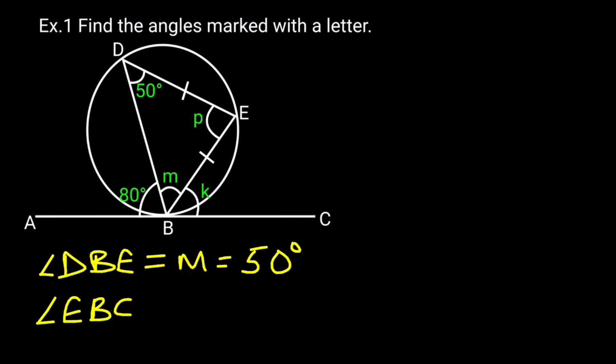Angle EBC, which is K, equals 50 degrees. Reason: angle in alternate segment. Angle DEB, which is P, equals 80 degrees. Reason: also angle in alternate segment.